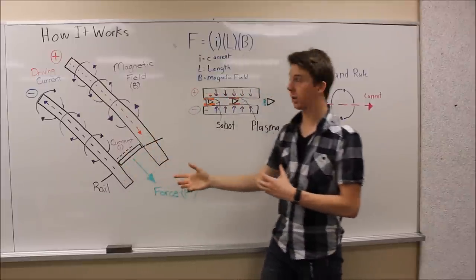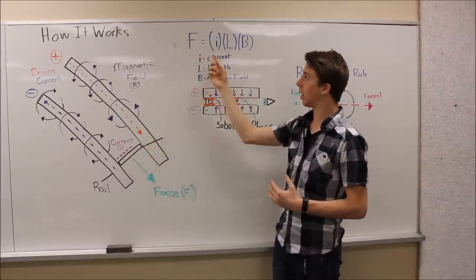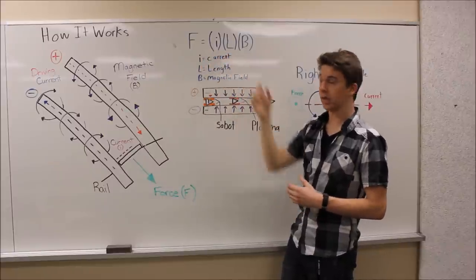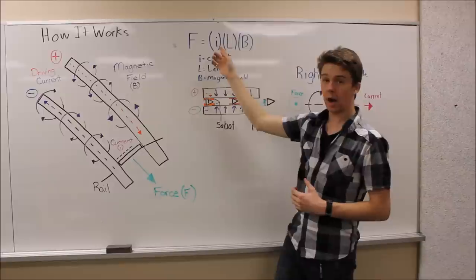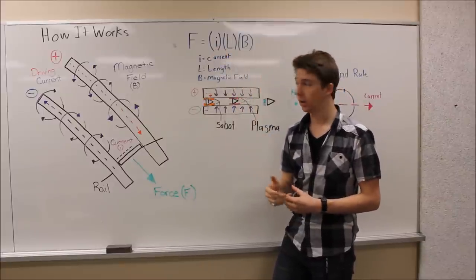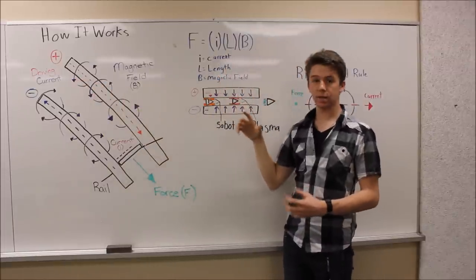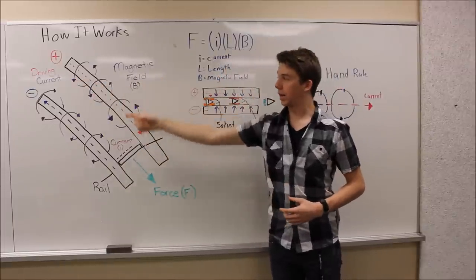These forces can be calculated by this equation: F equals I times L times B. In this equation, I is the magnitude of our current, L is the length of our rail gun, and B is the magnitude of our magnetic fields.